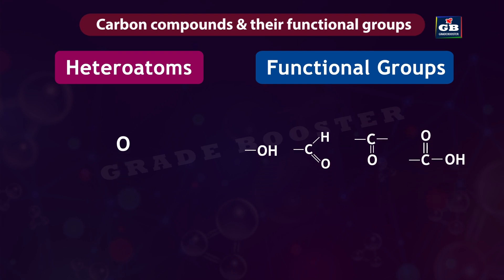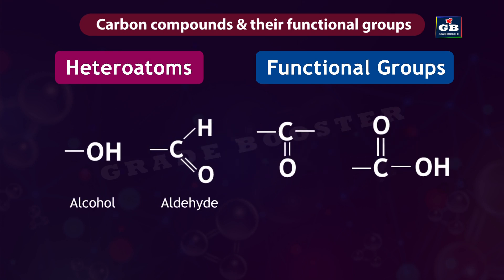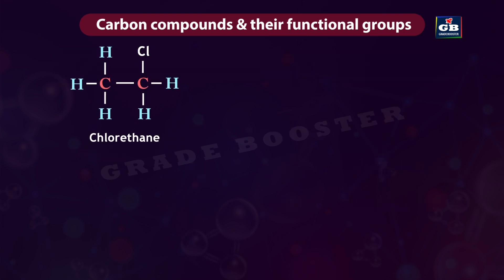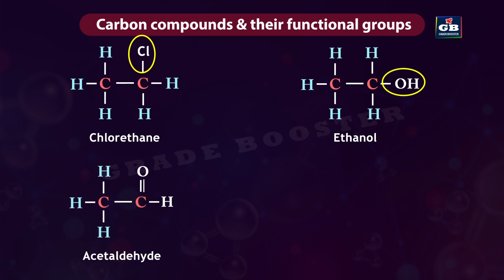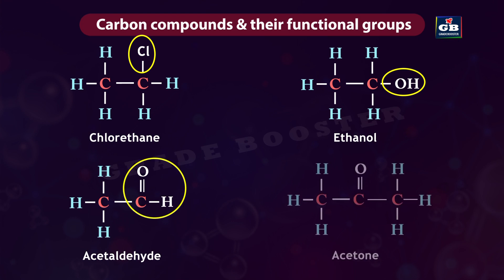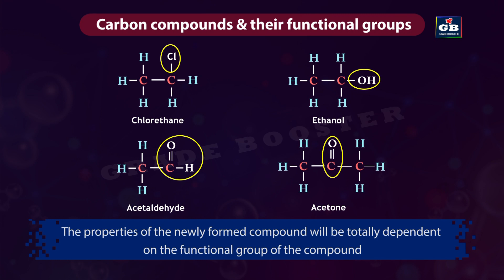For example, oxygen is the hetero atom that forms various functional groups like alcohol, aldehyde, ketone, carboxylic acid, etc. This is chloroethane — chlorine is the functional group. This is ethanol — OH is the functional group, so it is an alcohol. This is acetaldehyde — CHO is the functional group, it is an aldehyde. This is acetone — CO is the functional group, it is a ketone. The properties of the newly formed compound are totally dependent on the functional group.